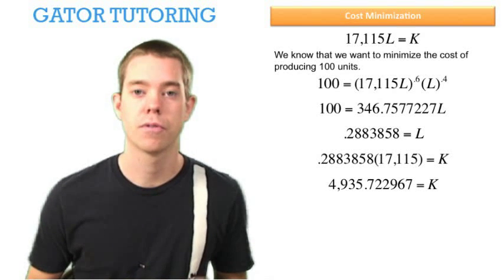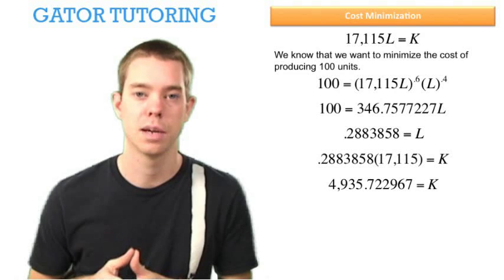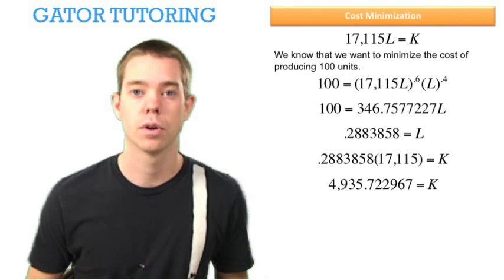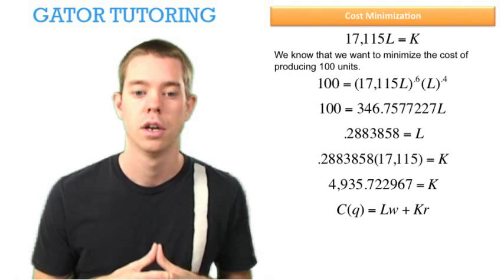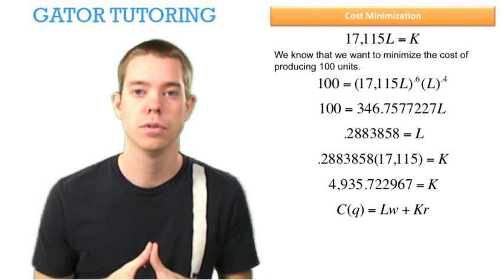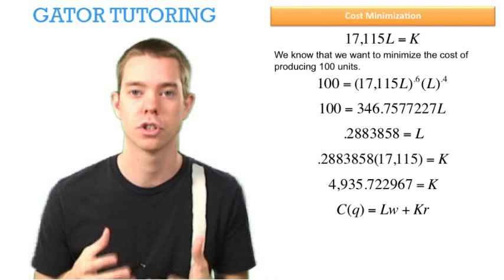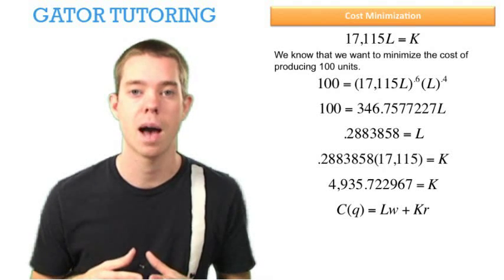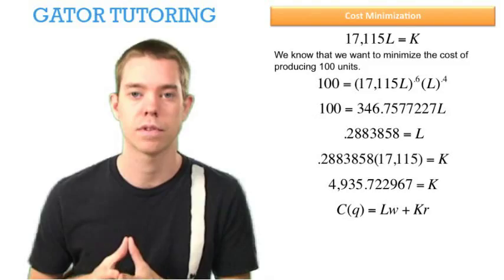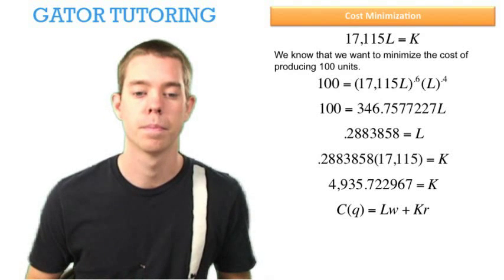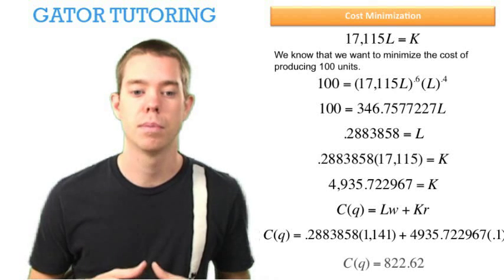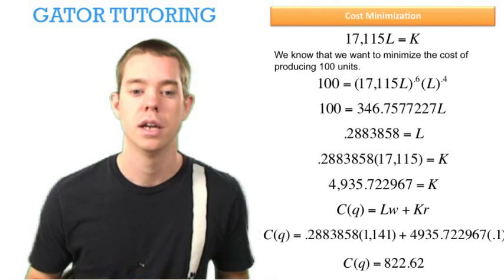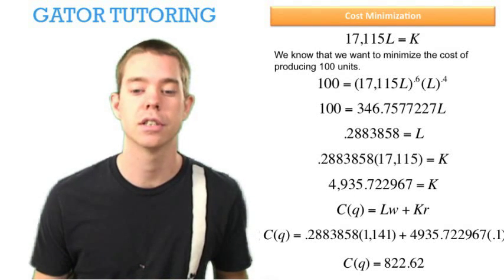Now we've solved for how much capital and labor we'll use. Solving for cost is easy. Total cost equals the amount of labor times the wage rate W, plus the amount of capital times the cost of capital R. Plugging in all our components, the minimum cost of producing 100 units is $822.62.